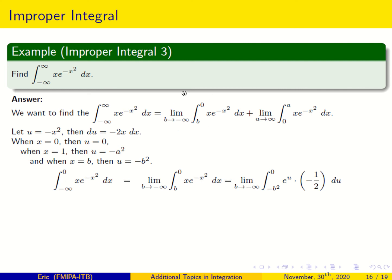We check the first integral. If this integral diverges, the whole integral diverges. If it converges, we must also check the second integral. Only if both converge does the total integral converge, and it equals the sum of the two. If either one diverges, the whole integral diverges.